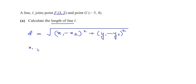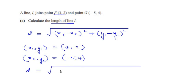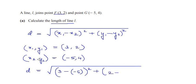We take x1, y1 as the coordinates of point F, written as (3, 2), and x2, y2 as the coordinates of G, that is (-5, 4). Substituting into the formula: d = √[(3 - (-5))² + (2 - 4)²].